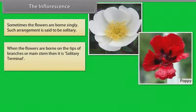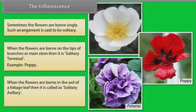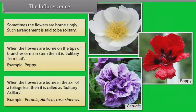When the flowers are borne on the tips of branches or main stem, then it is solitary terminal. Example: poppy. When the flowers are borne in the axil of a foliage leaf, then it is called solitary axillary. Example: Petunia, Hibiscus rosa-sinensis.